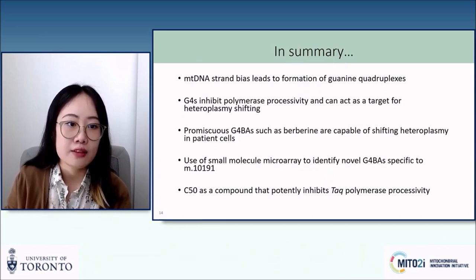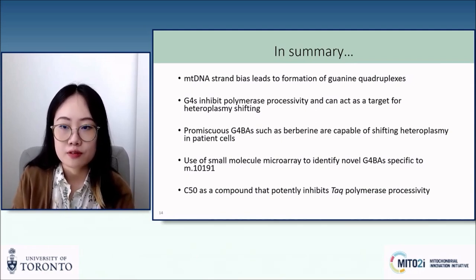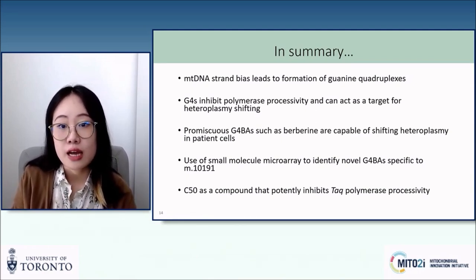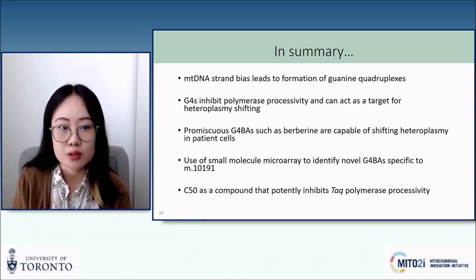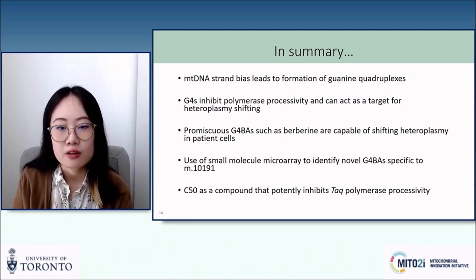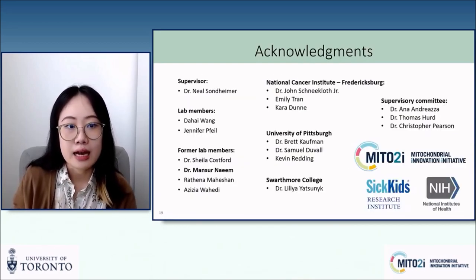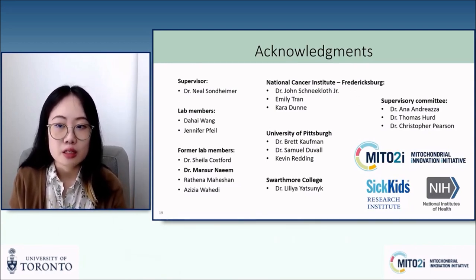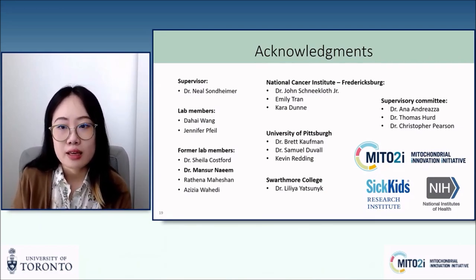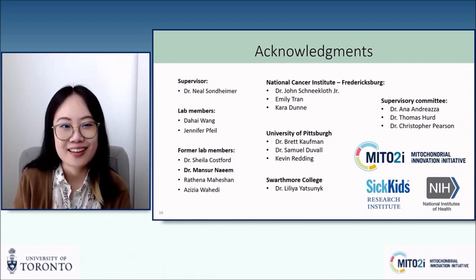In summary, I showed you today that the strand bias in mitochondrial DNA makes it prone to form secondary structures called guanine quadruplexes, which are capable of inhibiting polymerase activity. This could then be utilized to induce heteroplasmy shifting of pathogenic mitochondrial DNA alleles, as was observed with the promiscuous G4 binding agent berberine. I've told you about our current pipeline for discovering novel G4 binding agents and showed you results from a recent small molecule microarray screen. I would like to thank my supervisor and committee members, my lab members — especially Mansur who did the work related to berberine — and Mito2i for their support of this project and this wonderful opportunity to present my work. Thank you all so much for listening.